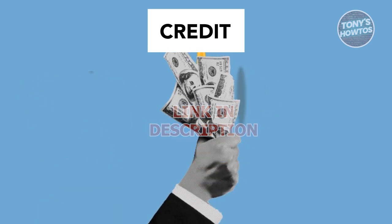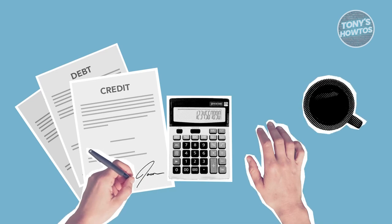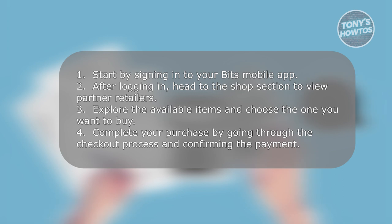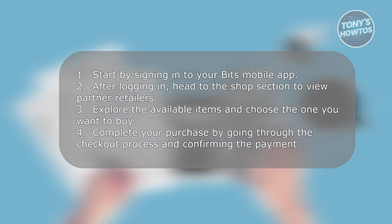So how do we actually start using our Bits Credit Card? To begin, log into your Bits mobile app. Once logged in, navigate to the Shop section where you can access partner retailers. Browse through the available items and select the one you wish to purchase. Proceed to the checkout process and authorize the payment.